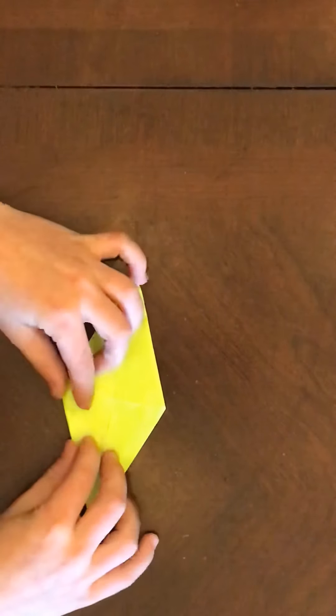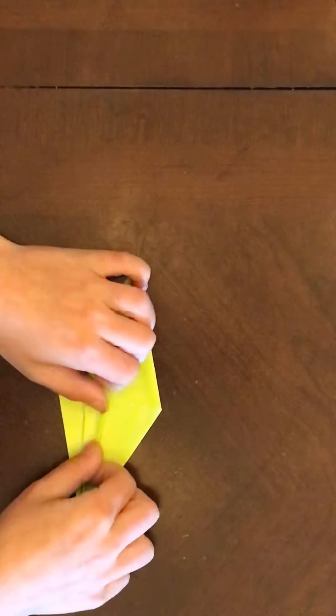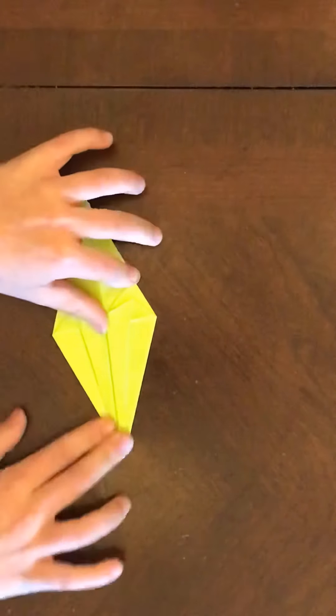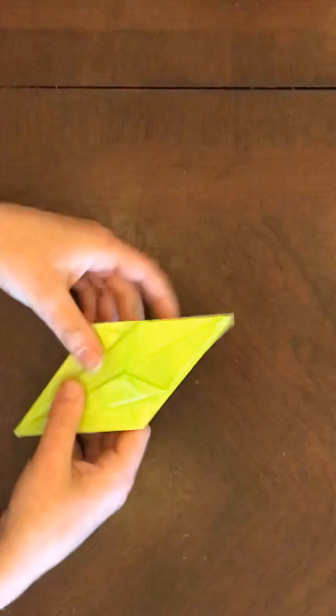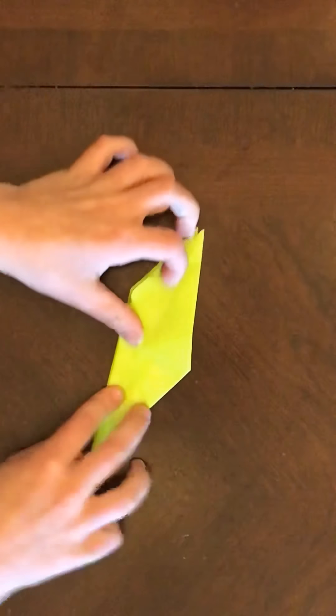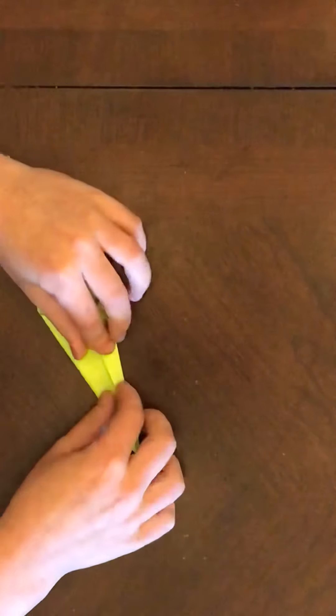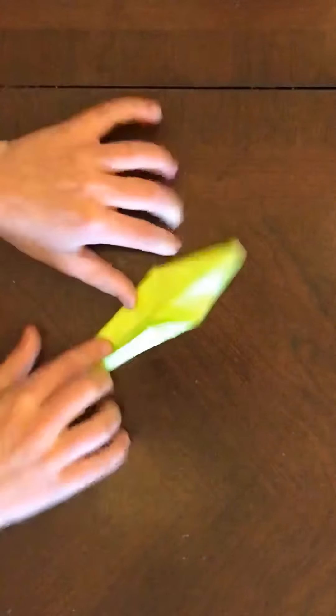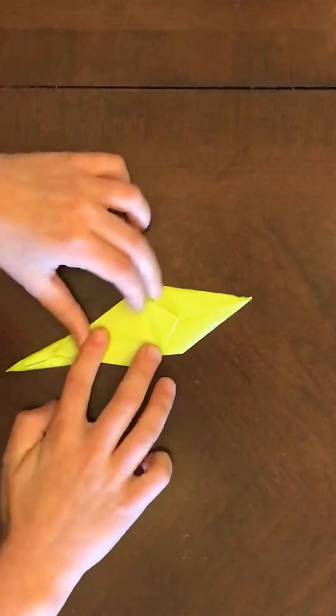You got to fold to the center. Fold these middle lines to the center like this. Flip over. Fold to center just like you did. Fold to center just like you did again. Fold down to the top flap. Fold down.